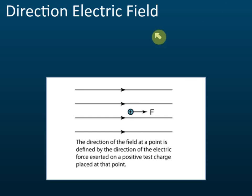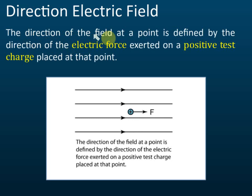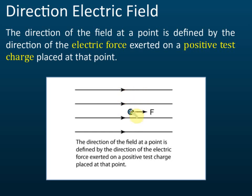The next thing to note about electric field is the direction of the electric field. The direction of the electric field at a point is defined as the direction of the electric force exerted on a positive test charge placed at that point. So if you put a positive charge inside an electric field and there is a force pushing it to the right, then the direction of the electric field is to the right.